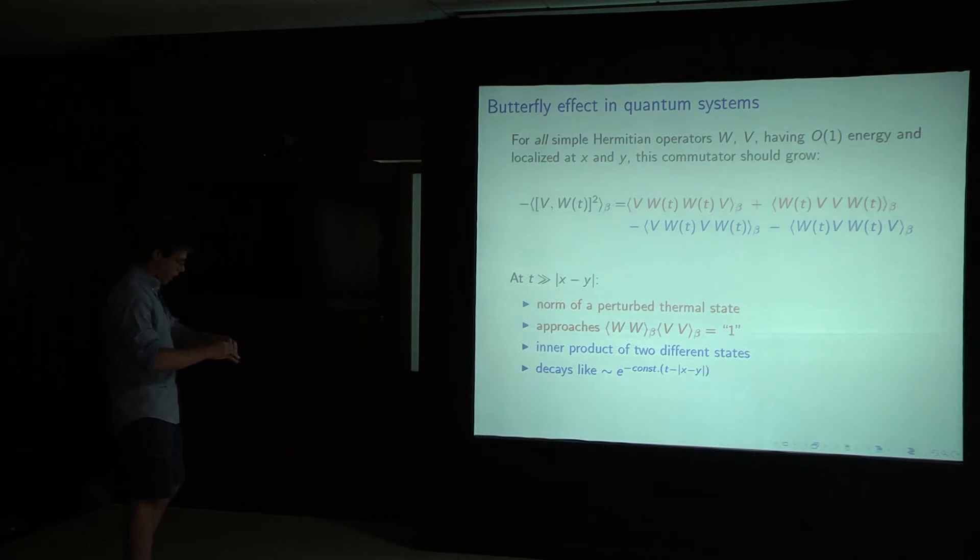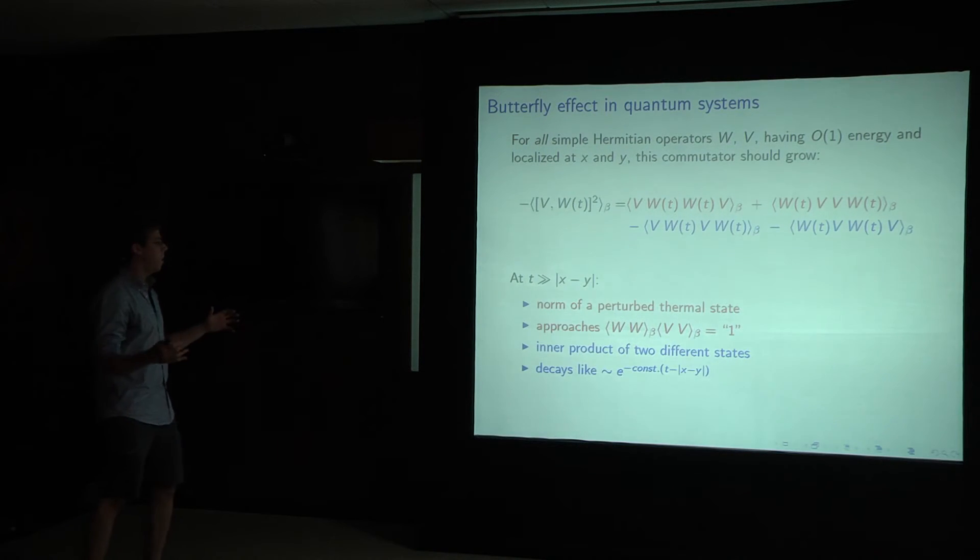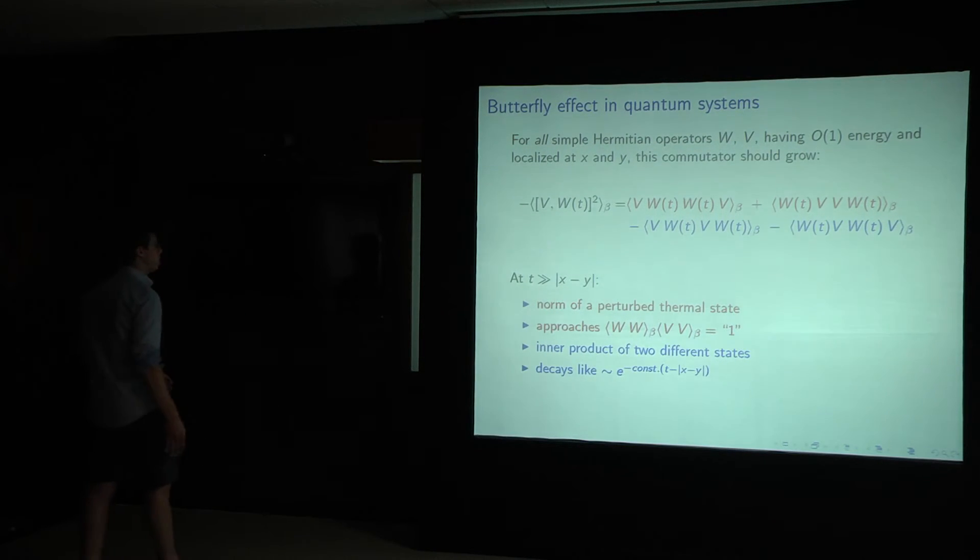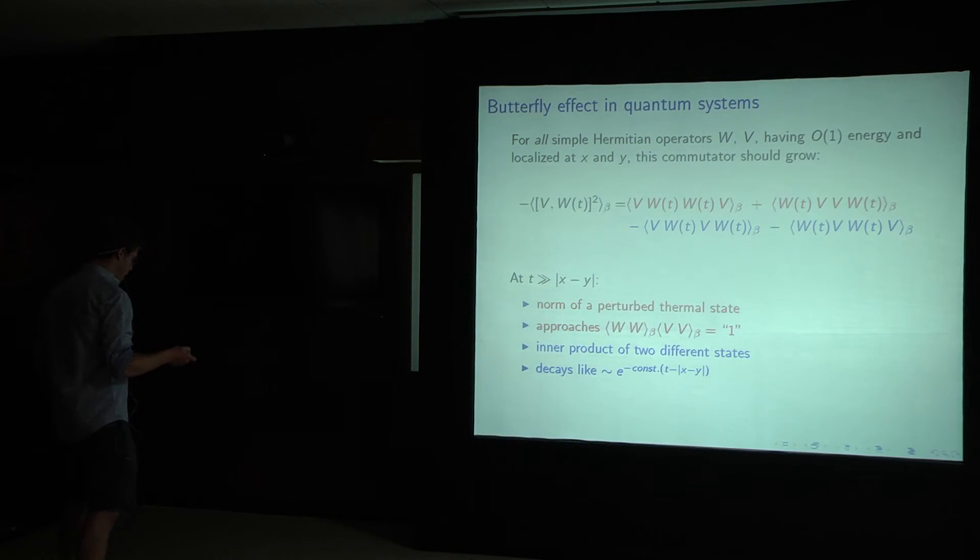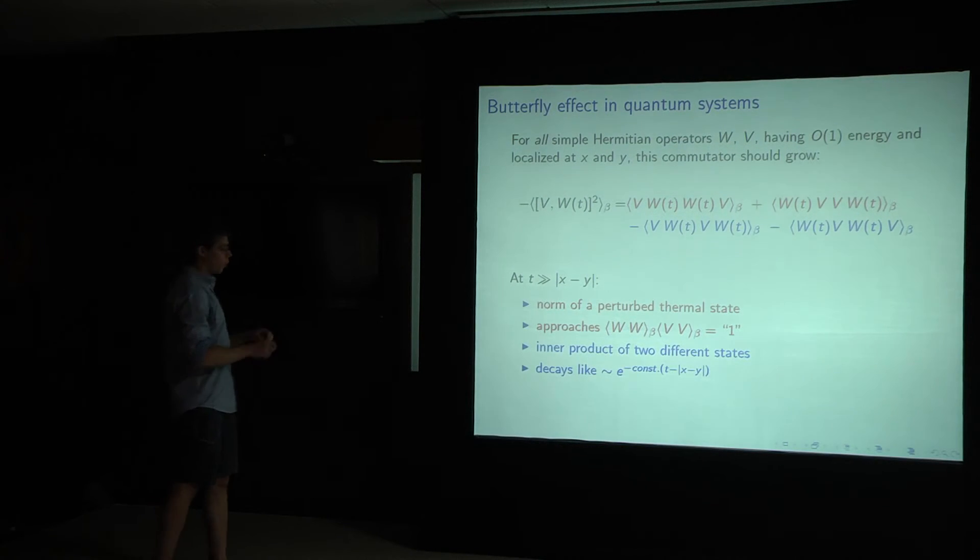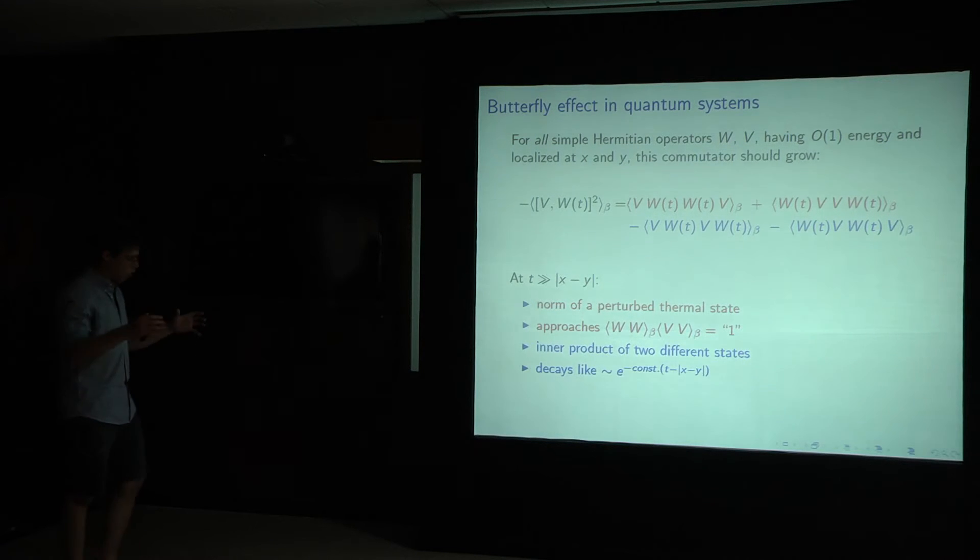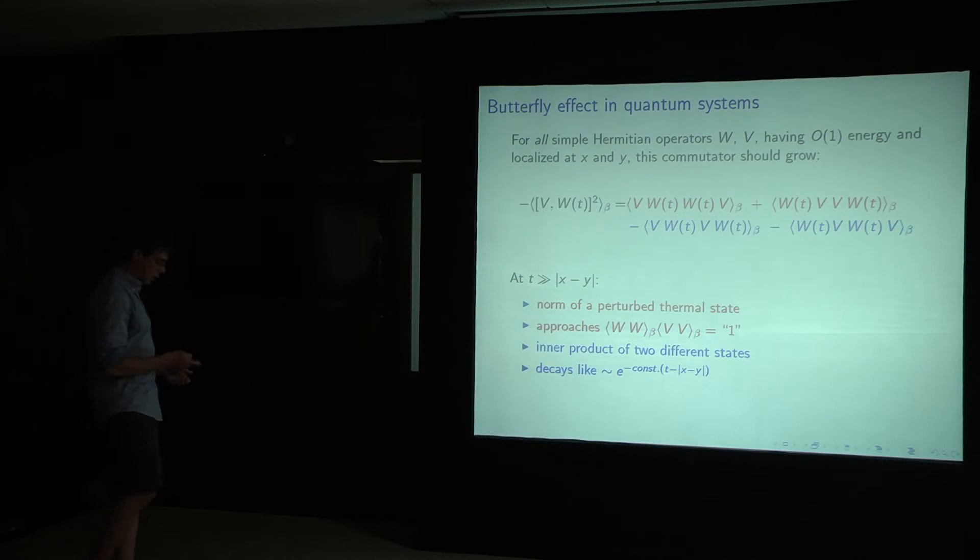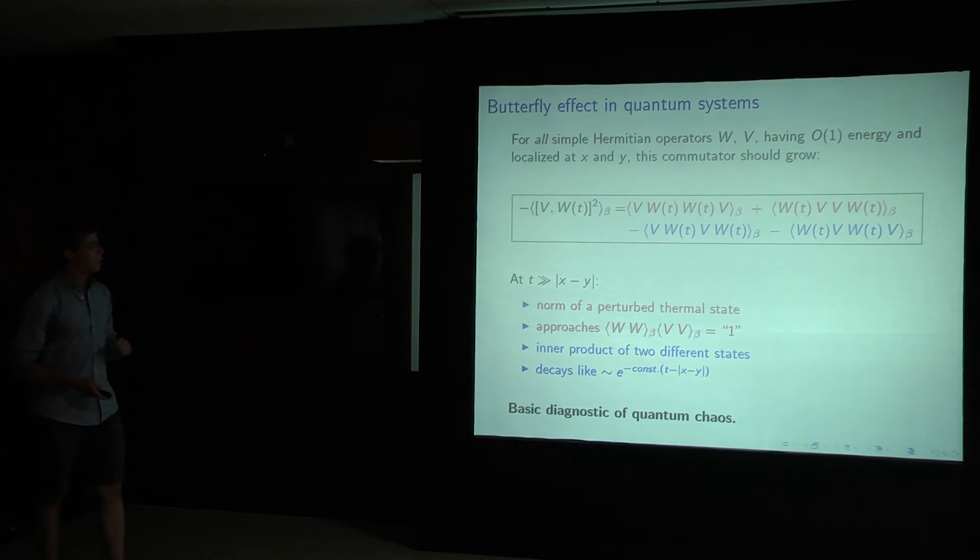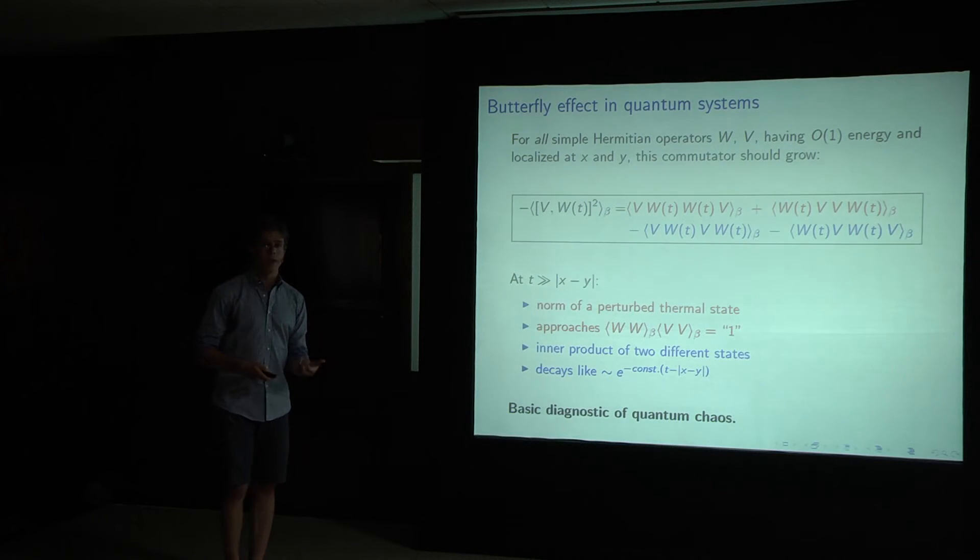There's a delay related to this growing of the W operator. And then eventually when it reaches to V, it should decay exponentially in time. And so what we learn is that the effect of chaos is to decorrelate. We wait some time for these operators to, for this perturbation to grow and reach V, at which point this correlation function decays. My claim is that this is the basic diagnostic of quantum chaos.